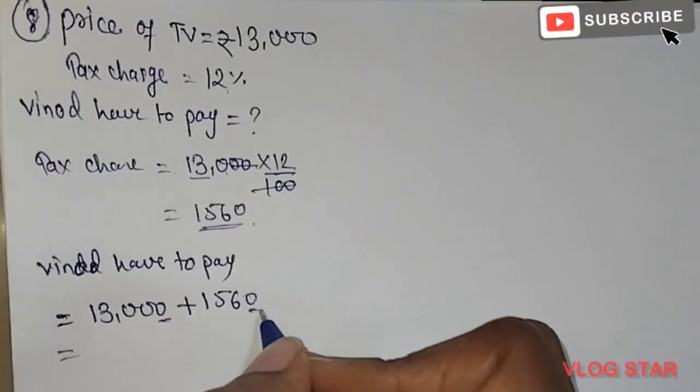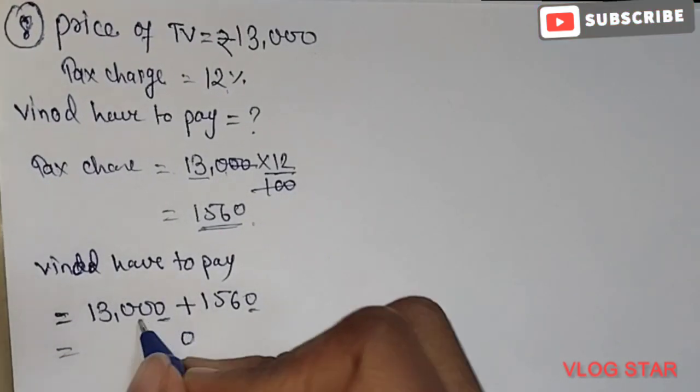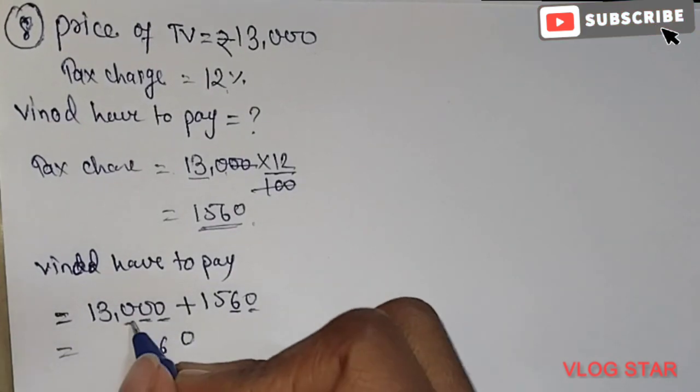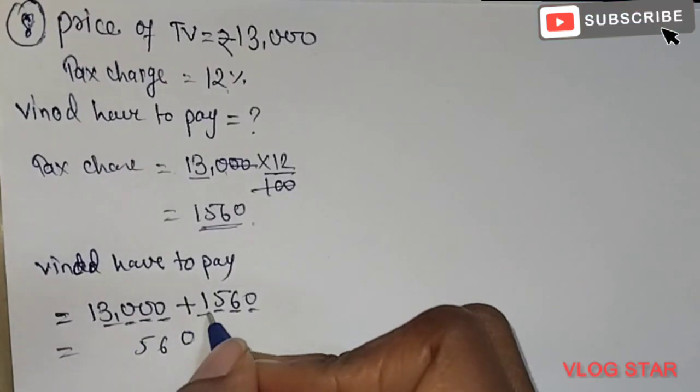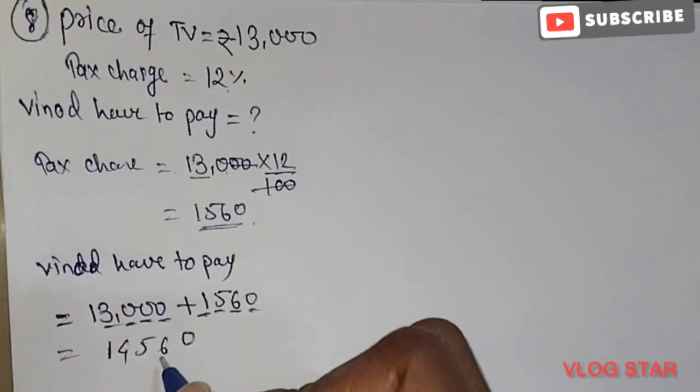Now add, you will get the answer: 0 plus 0 is 0, 0 plus 6 is 6, 0 plus 5 is 5, 3 plus 1 is 4, and 1 as it is.